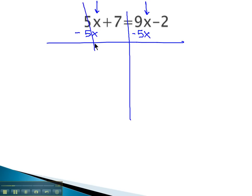Because on the left side, 5x minus 5x will leave us with 0, so we only have 7 equals. And on the right side, 9x's and we take 5x's away, we're left with 4x's. And we still have the minus 2.